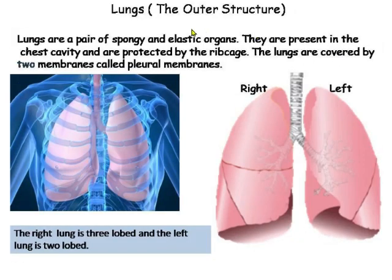Now let us see the outer structure of the lungs. Lungs are a pair of spongy elastic organs. They are present in the chest cavity and are protected by the rib cage. As you can see, the lungs are covered by two membranes called pleural membranes.